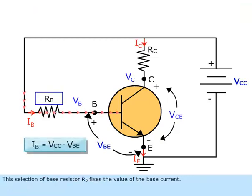This selection of base resistor RB fixes the value of the base current.